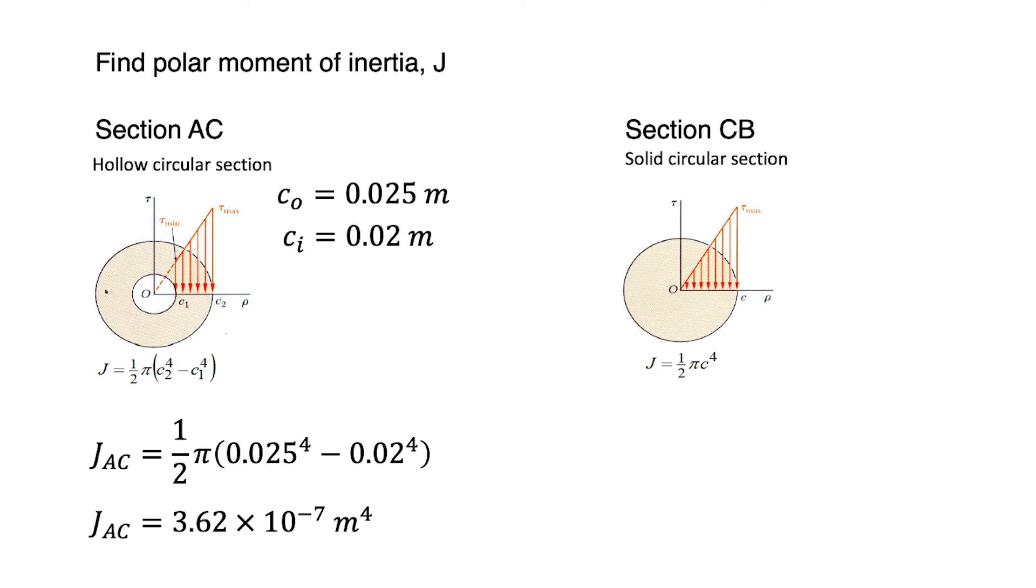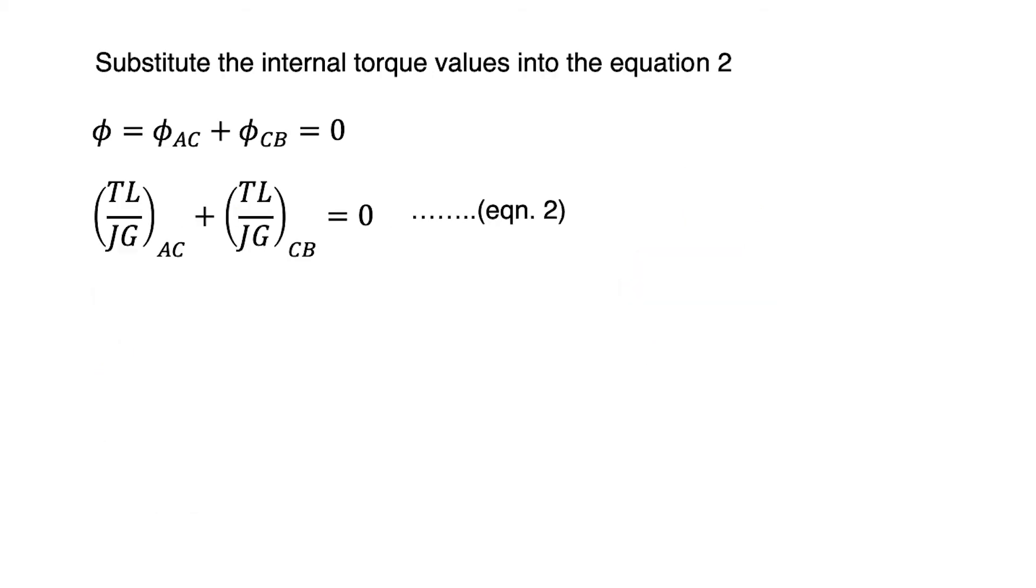For section CB, it is solid circular section. Then we get JCB = 6.14 × 10^-7 m^4.